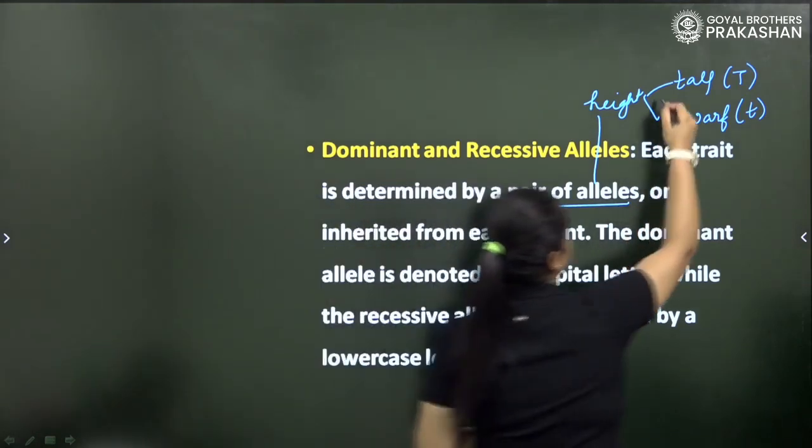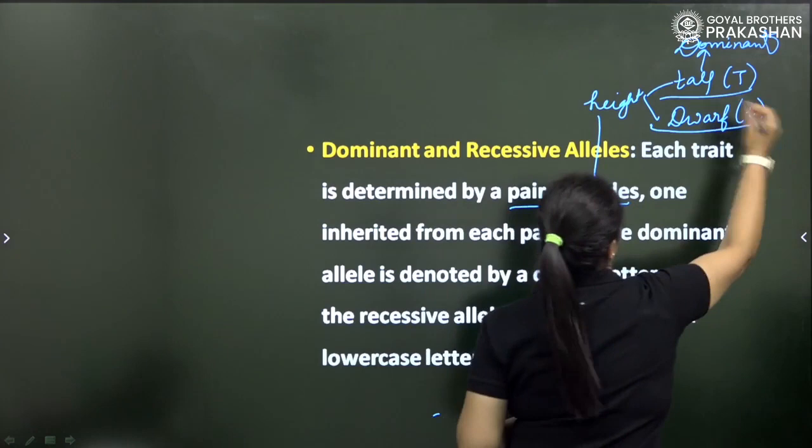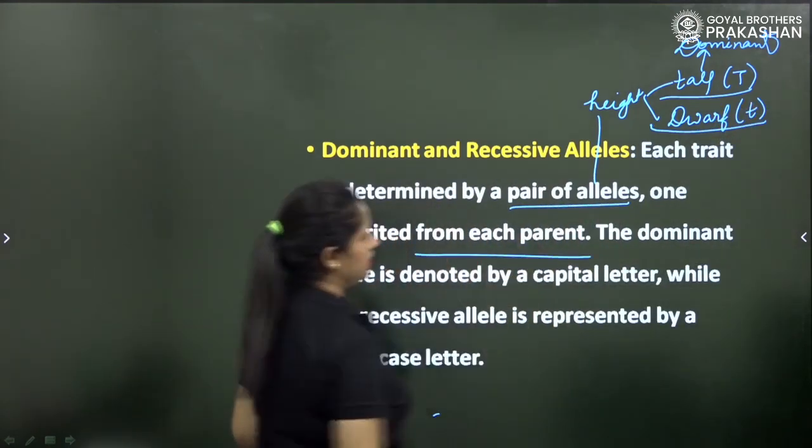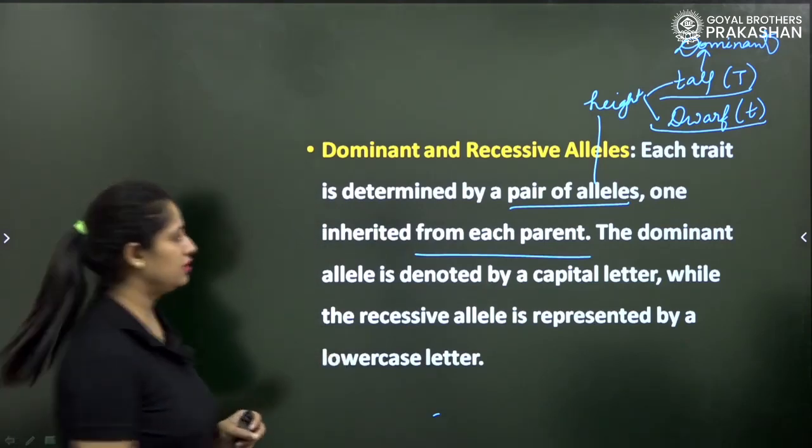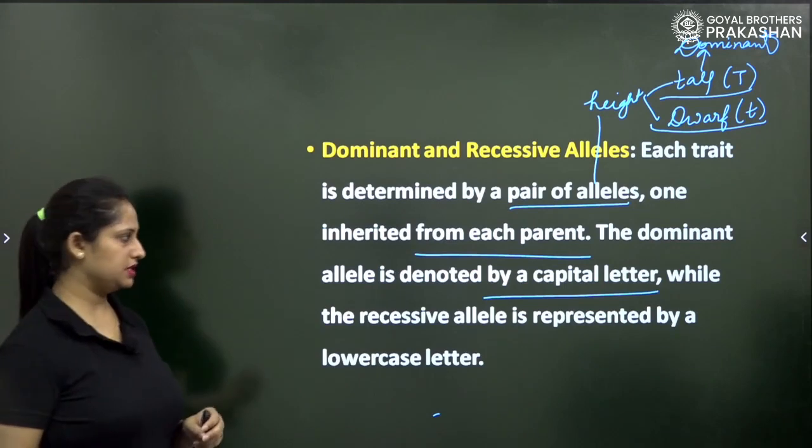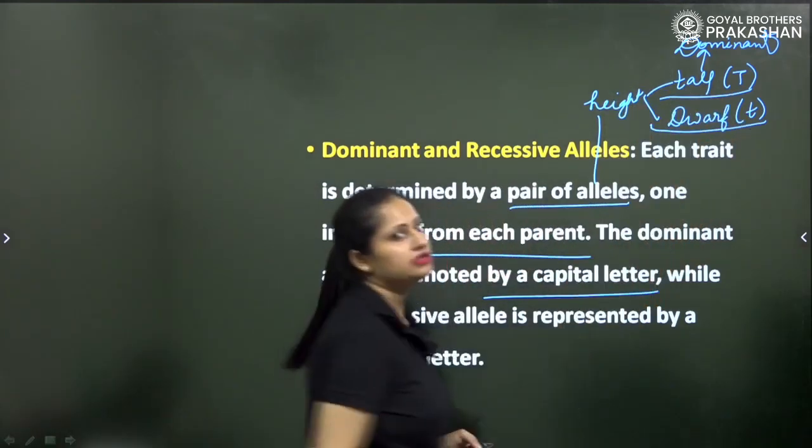This is the recessive one. One inherited from each parent. The dominant allele is denoted by the capital letter while the recessive allele is represented by a lowercase letter, for example small t and capital T.